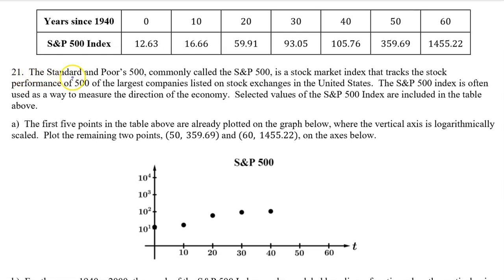Number 21. The Standard & Poor's 500, commonly called the S&P 500, is a stock market index that tracks the stock performance of 500 of the largest companies listed on stock exchanges in the United States. The S&P 500 index is often used as a way to measure the direction of the economy. Selected values of the S&P 500 index are included in the table above. Part A. The first 5 points in the table above are already plotted on the graph below, where the vertical axis is logarithmically scaled. Plot the remaining 2 points, shown here, on the axes below.